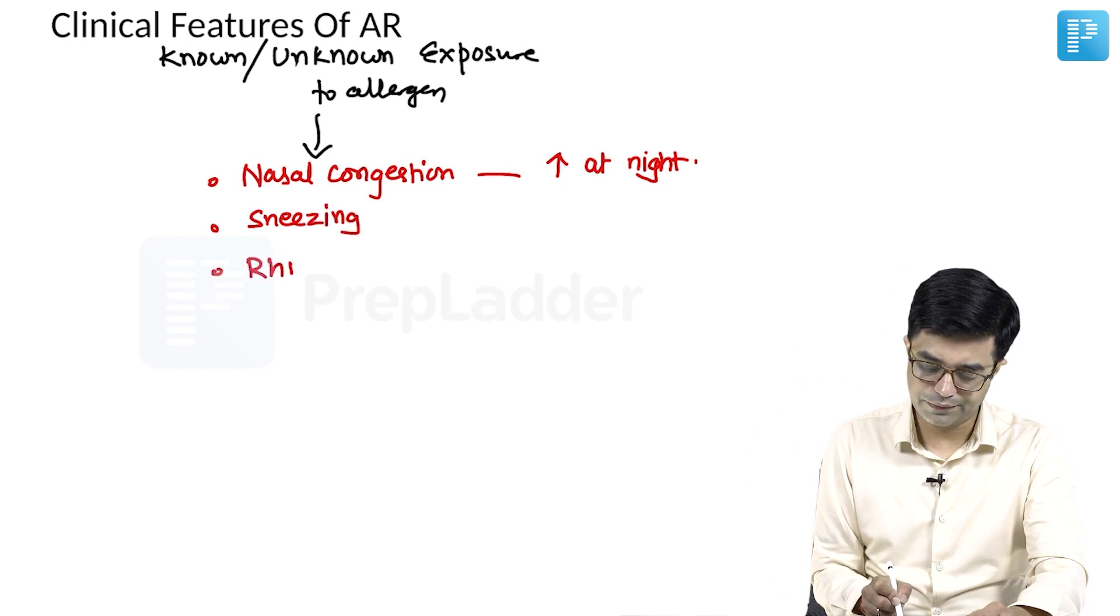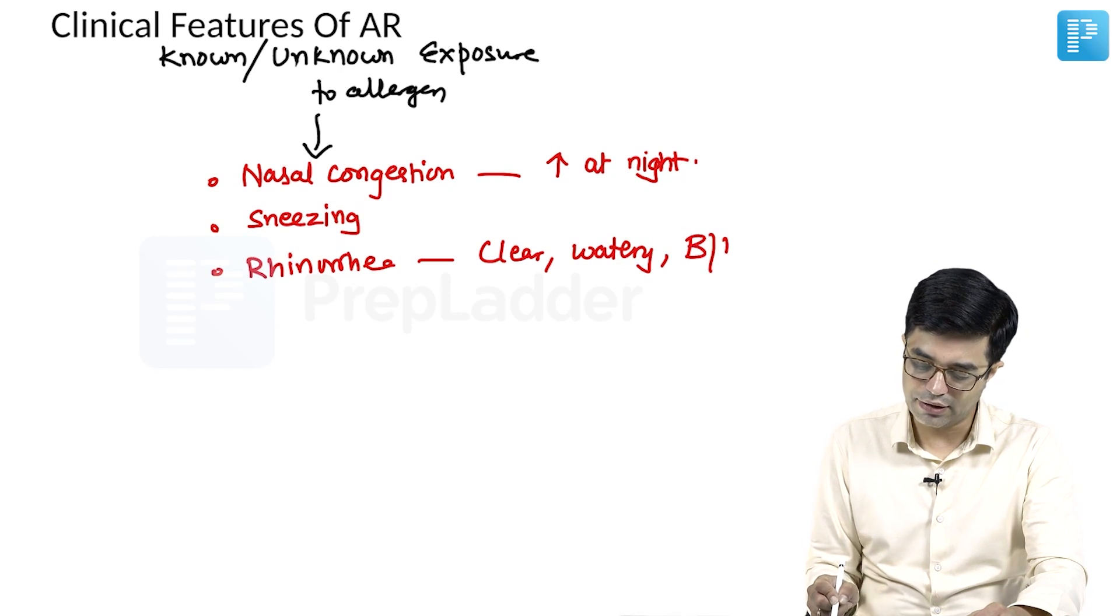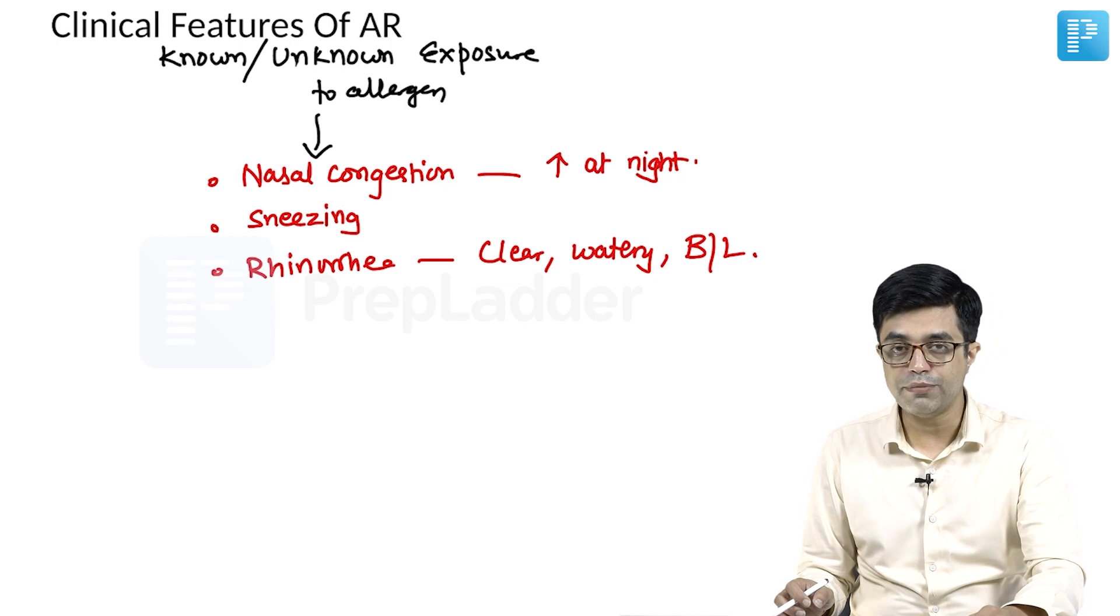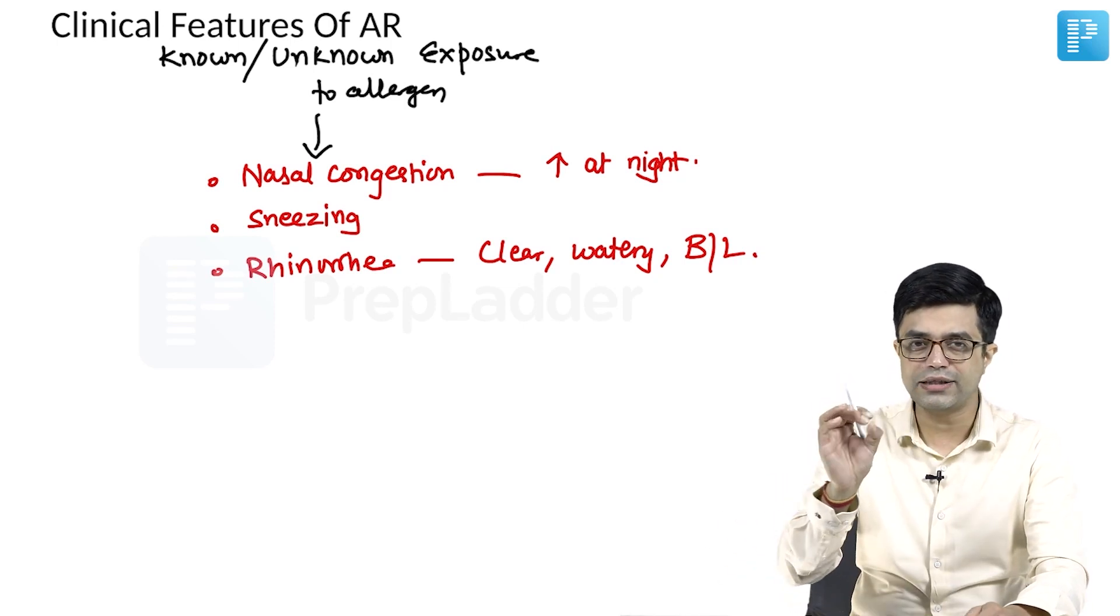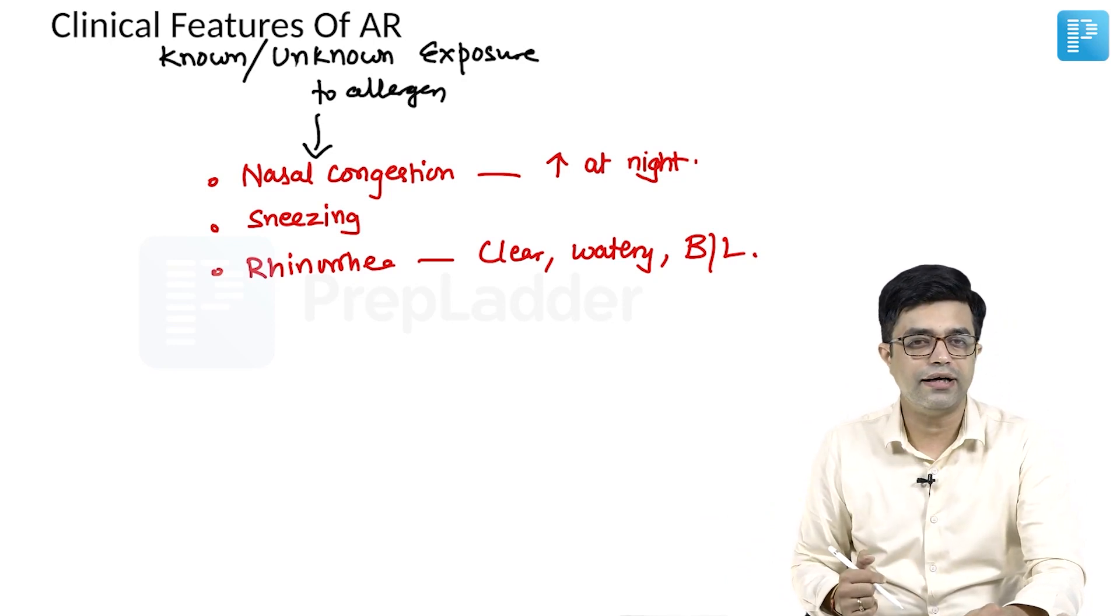There will be rhinorrhea. The rhinorrhea in these children is always clear, watery rhinorrhea, and it is bilateral. You do not find it to be unilateral rhinorrhea. You do not find it to be purulent. Purulent rhinorrhea or strictly unilateral symptoms take the diagnosis away towards other possibilities than allergic rhinitis.